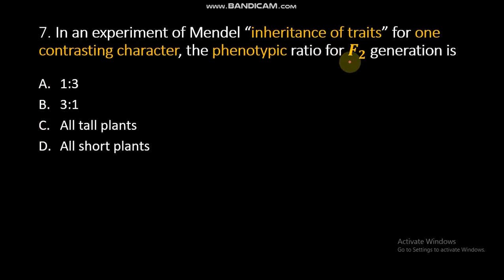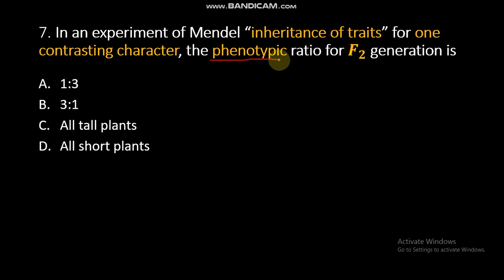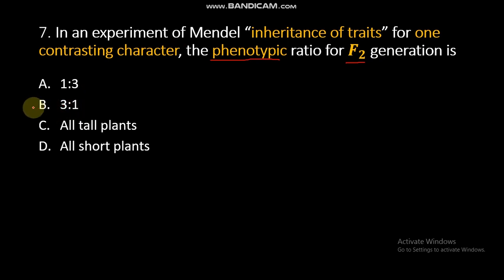Question number 7: In an experiment of Mendel, for inheritance of traits for one contrasting character, the phenotypic ratio for F2 generation is? For one contrasting character in F2 generation, the phenotypic ratio is 3:1. Therefore, B is the right answer.